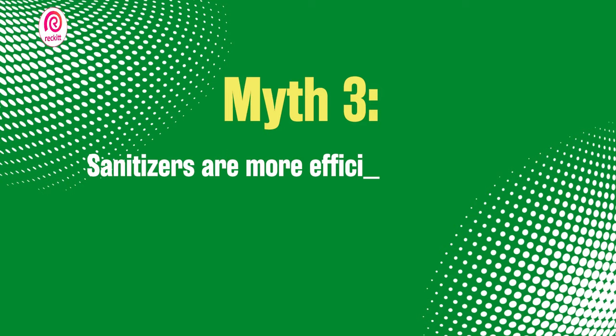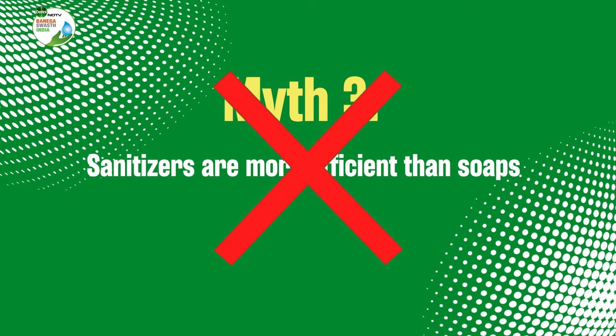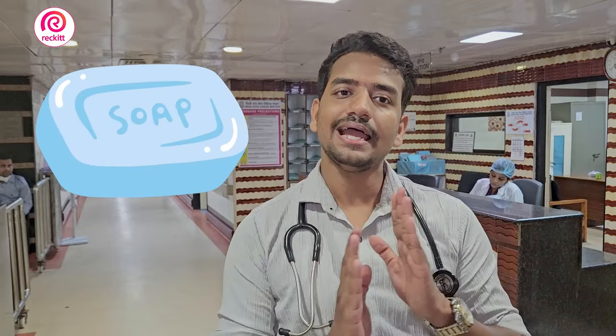There's one more myth that sanitizers are more efficient than soaps, which is absolutely false. We need to understand the difference between a soap and a sanitizer. Sanitizer consists of ethyl alcohol at more than 60%, which is effective at killing germs.